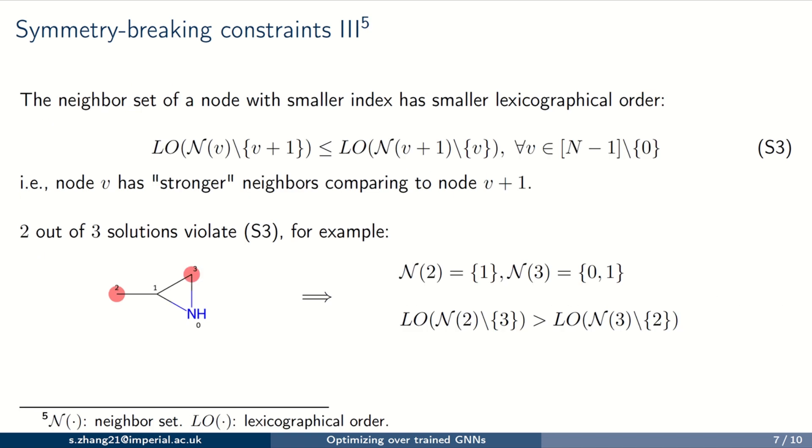After the first node is chosen by S2, constraints S3 are used to index the rest nodes. The basic idea is that node V should have stronger neighbors comparing to node V plus 1. By stronger, we mean nodes with smaller indexes. Among the three solutions satisfying both S1 and S2, two of them will be removed because they violated S3.